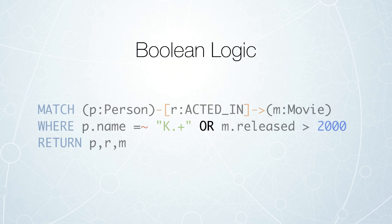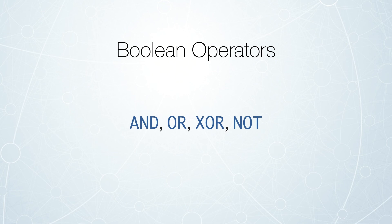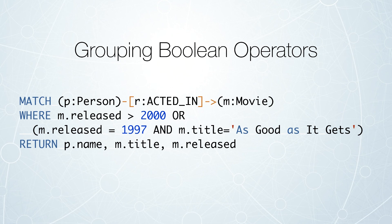You may have noticed here that I also use some Boolean logic — comparing the name based on that regular expression, but also comparing the released date and returning movies that match one or the other of those two criteria. There are additional Boolean operators you can use, such as AND, XOR, and NOT. You can group your Boolean operators in a more complex statement using parentheses — for example, grouping released equals 1997 and title is As Good as It Gets, to apply the appropriate Boolean logic.